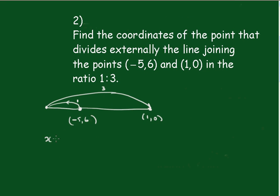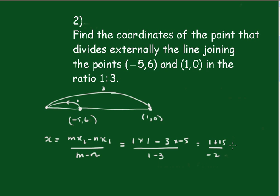Therefore, x equals mx2 minus nx1 over m minus n, which is 1 times 1 minus 3 times negative 5 over 1 minus 3, which is 1 plus 15 over negative 2, which is negative 8. And that makes sense, doesn't it? Negative 8.